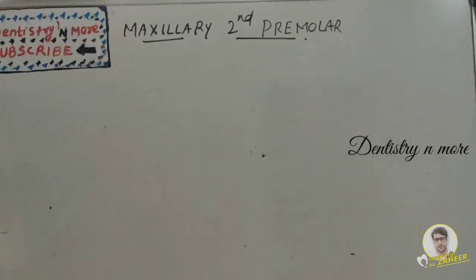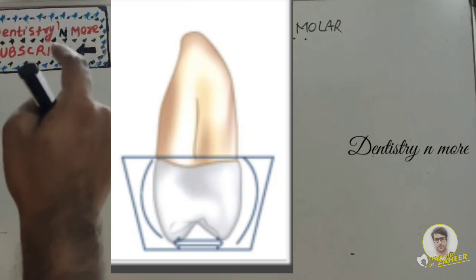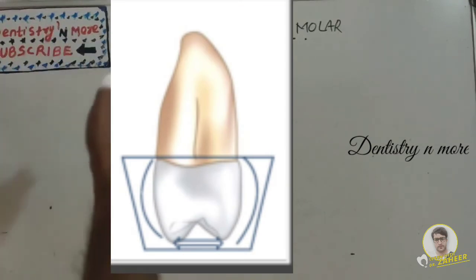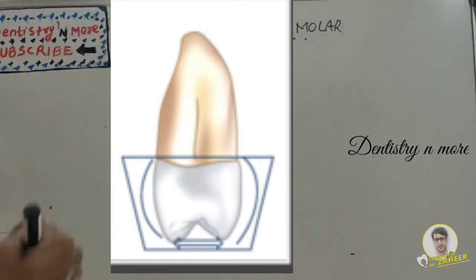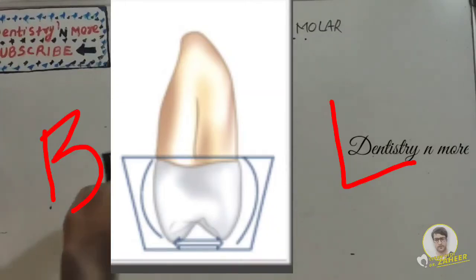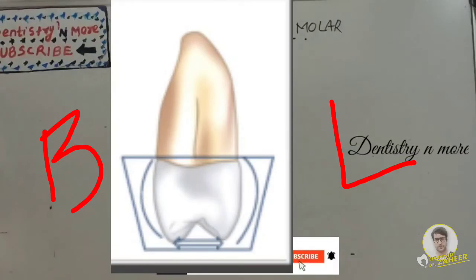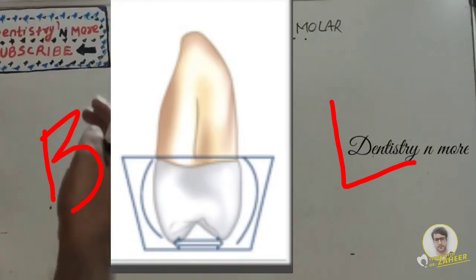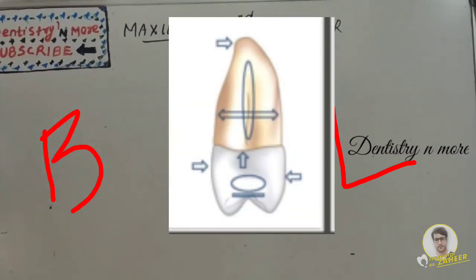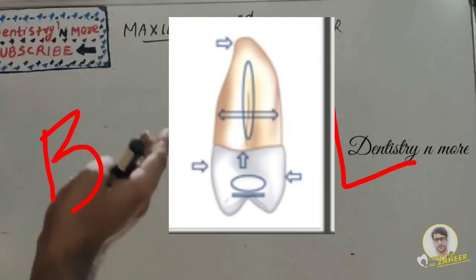Now the mesial aspect: the outline is trapezoidal, the buccal and lingual profiles are slightly convex, and the cusps are almost the same length. There is greater distance between the cusps, which widens the occlusal surface because it is a posterior tooth. The crest of curvature on the buccal side is at the junction between the middle and cervical one-third.